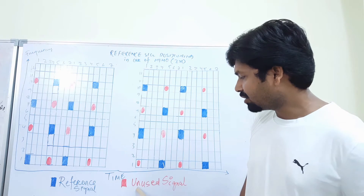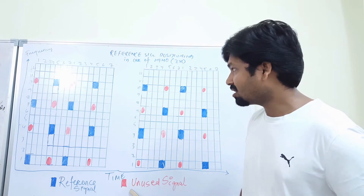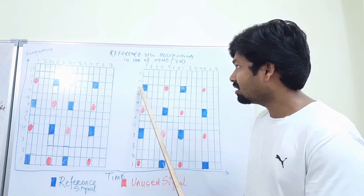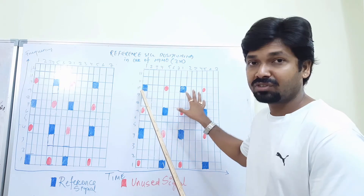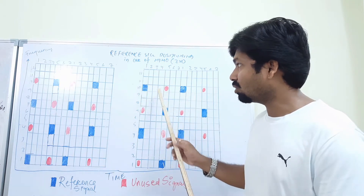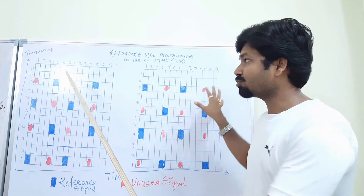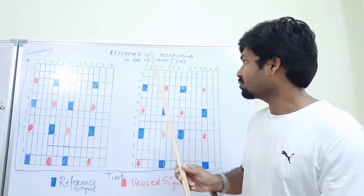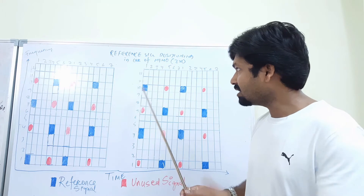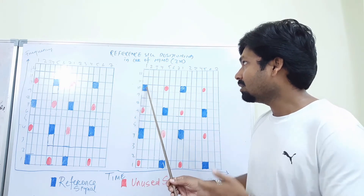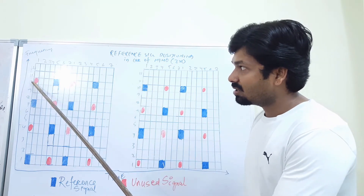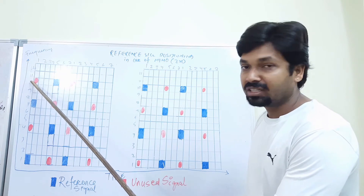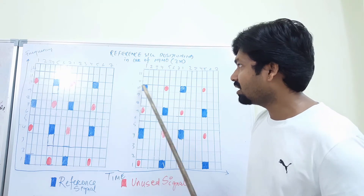The black is the active signal and the red is unused — we cannot use this position because we are already transmitting on the same location with a different port. These are not two separate blocks; logically this is one, but I am showing two different ports and how they are transmitted. So in port one I am transmitting here, and here it is reserved or unused.